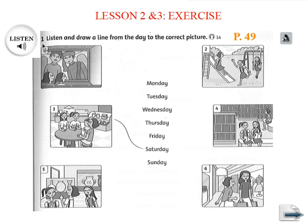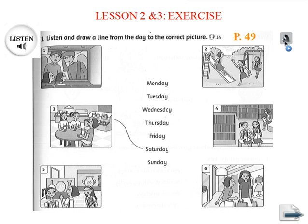Now, exercise 1. Listen and draw a line from the day to the correct picture. Now we have 6 pictures here and the days from Monday to Sunday. You listen carefully to the conversation and then draw a line from the day to the correct picture. Are you clear? Now let's listen.